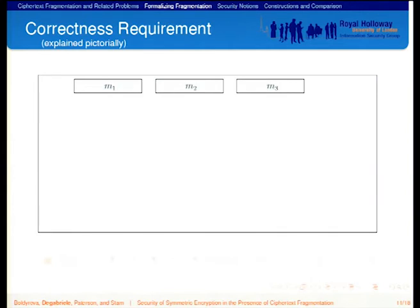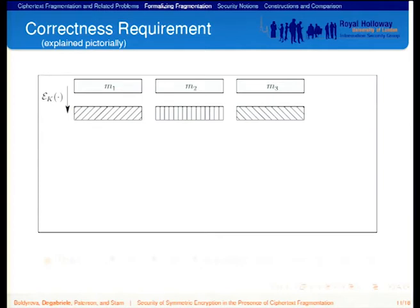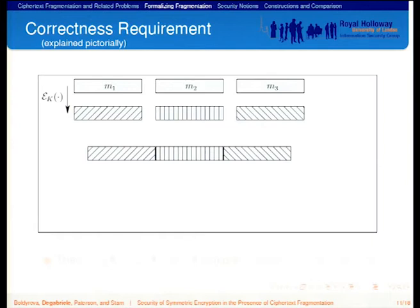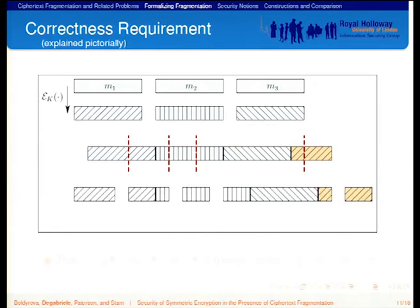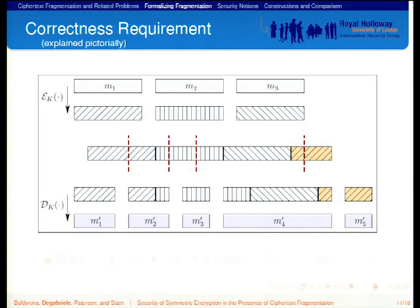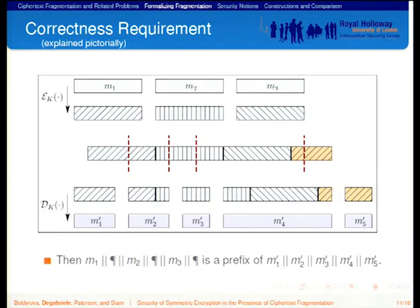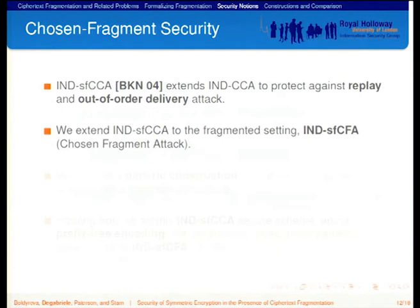We also have to define correctness. We define it formally in the paper, but here I'll explain it pictorially. We require that for any vector of messages — say, three messages — if we encrypt them separately, concatenate the ciphertexts, optionally append any string at the end, and apply an arbitrary fragmentation pattern to produce a sequence of ciphertext fragments, then sending those fragments to the decryption algorithm one by one and concatenating the outputs should yield a string prefixed with the encoding of the original message vector. The encoding is a concatenation of the messages separated by the end-of-message symbol. As you can see, even correctness is already more complex to define, and there are further challenges in the security notions.